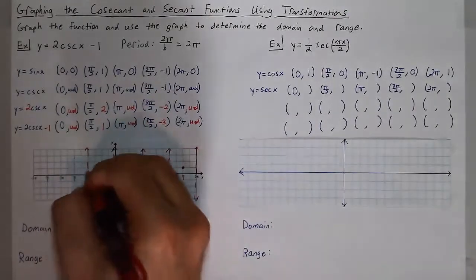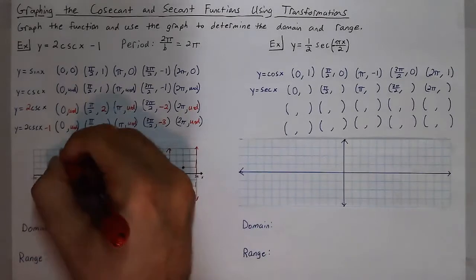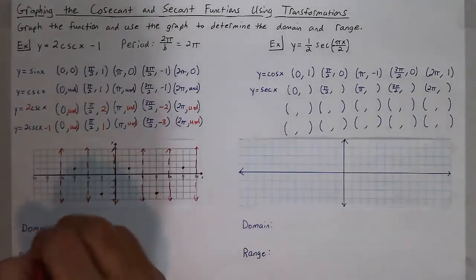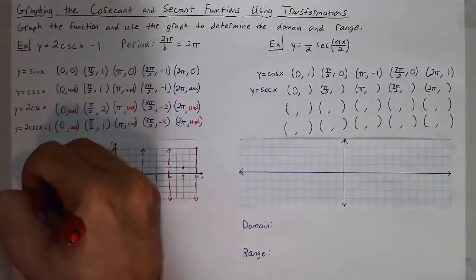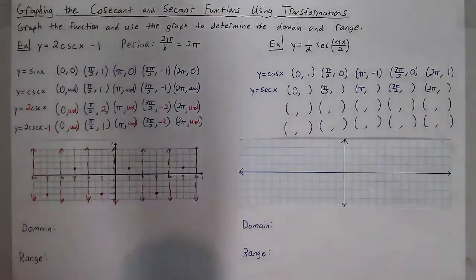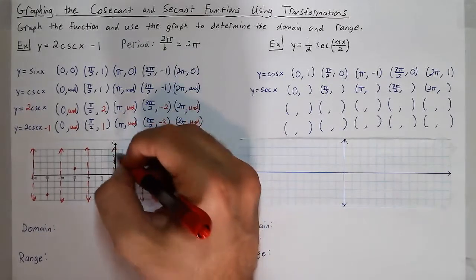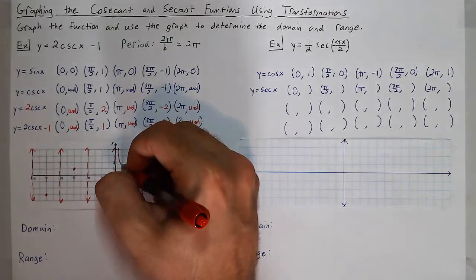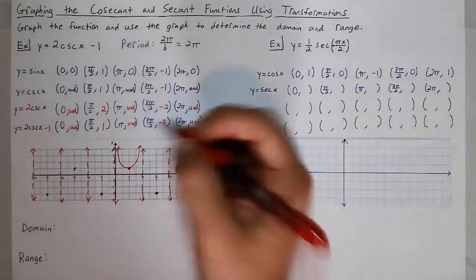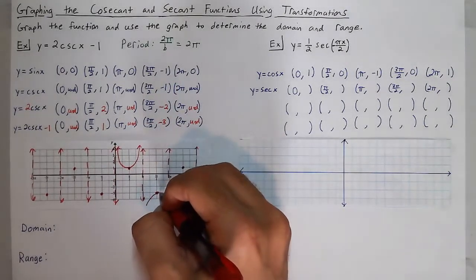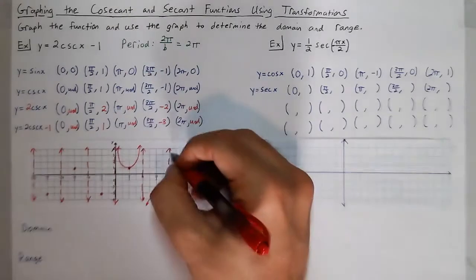Then an asymptote at negative π. At negative 3π/2 we are at 1 again. Asymptote at negative 2π. Then at negative 5π/2 we are at negative 3 again. Then an asymptote at 3π. If you remember what these graphs look like from the previous lesson, they make these little U shapes pointing away from each other as you go from asymptote to asymptote, bending away from the sine and cosine graph.